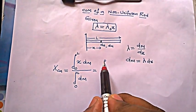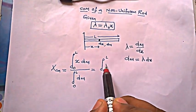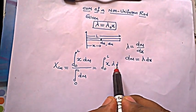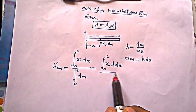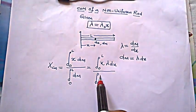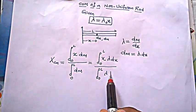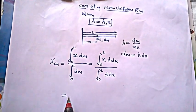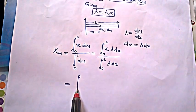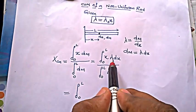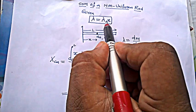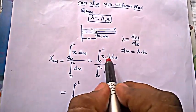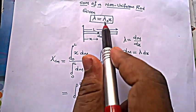So from 0 to L, x dm is lambda dx, and divided by 0 to L, dm is again lambda dx. Now in place of lambda I can write lambda naught into x. Don't cancel lambda because it is depending on x — lambda naught can be cancelled because it's a constant.